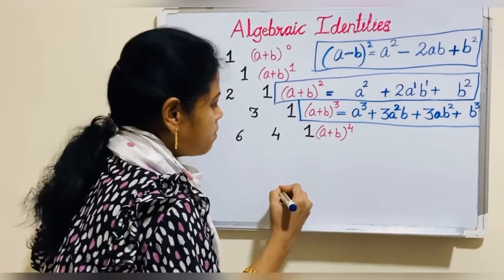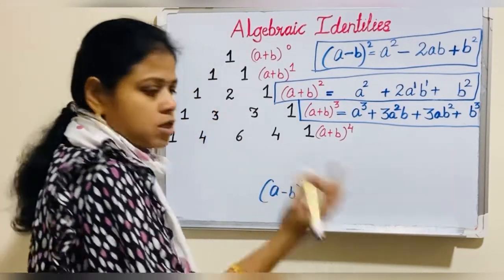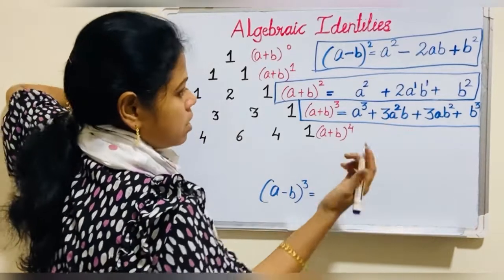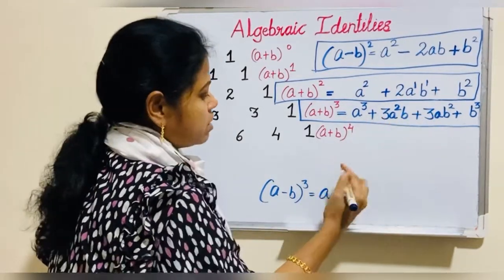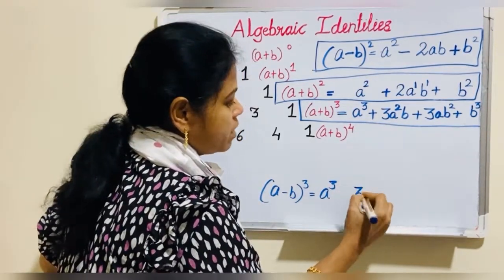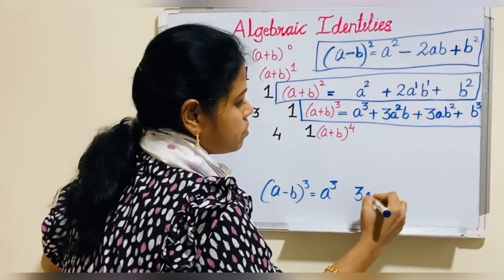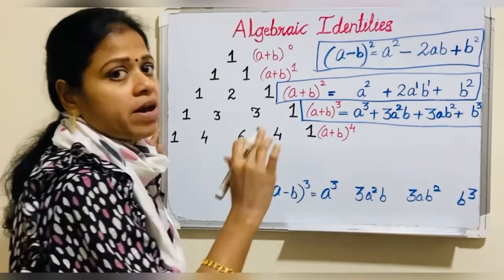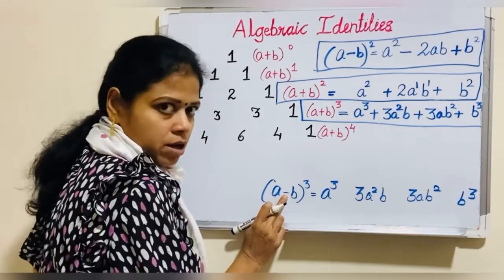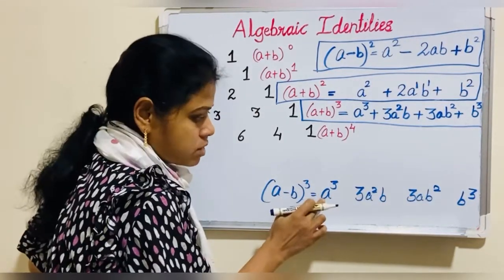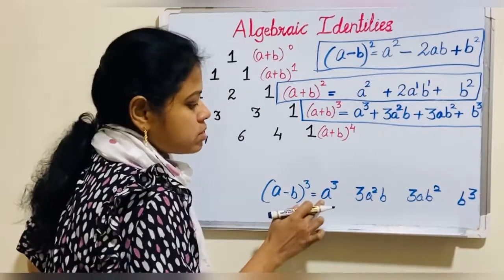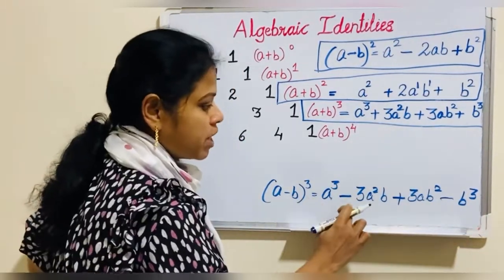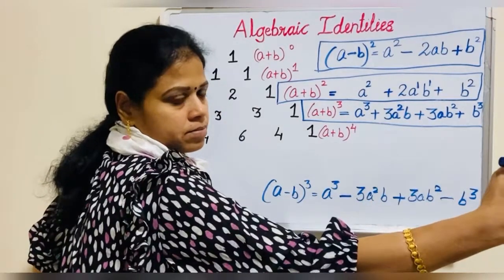Now what is (a−b)³? The terms are the same: a³, 3a²b, 3ab², b³ — four terms. But the signs are different. If it is minus, the signs alternate starting with positive: first term positive, second term negative, third term positive, fourth term negative. So (a−b)³ = a³ − 3a²b + 3ab² − b³.